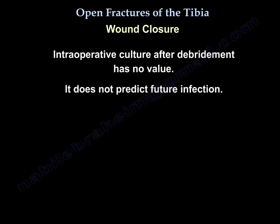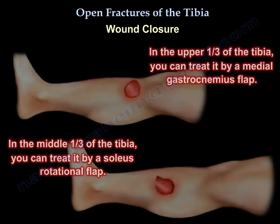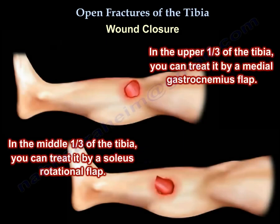Intraoperative culture after debridement has no value and does not predict future infection. Fractures of the proximal two-thirds of the tibia are treated with a rotational flap. Fractures of the distal third require a free flap. In the upper third of the tibia, a medial gastrocnemius flap can be used. In the middle third, a soleus rotational flap is used.